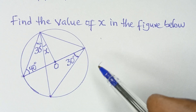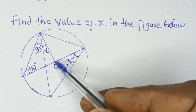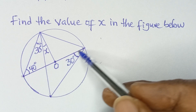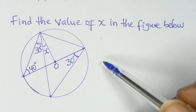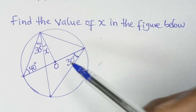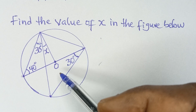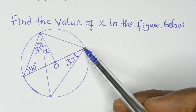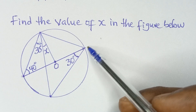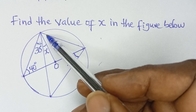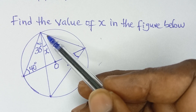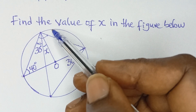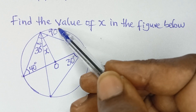The next thing to note is that this straight line here is a diameter. The theorem states that an angle in a semicircle is a right angle — that is another theorem in circle geometry. So this diameter makes this part a semicircle, and the angle it makes at the semicircle is a right angle, meaning it is 90 degrees. So the whole of this angle here is 90 degrees.